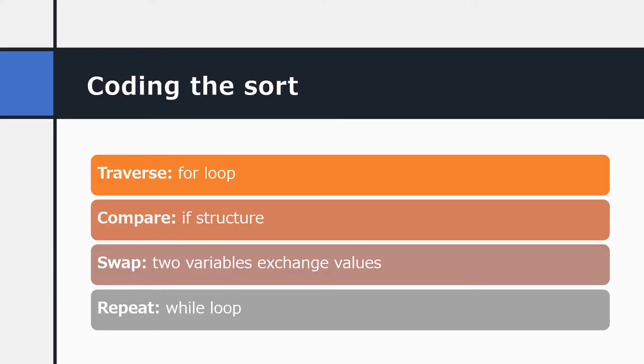To traverse the list we'll use a for loop, and to compare each item with the item that follows it we'll use an if structure. Inside the if structure we'll need to swap the values of two variables, and the whole thing will be put inside a big while loop which will keep repeating until we've got no more swaps. We'll come back to this later.